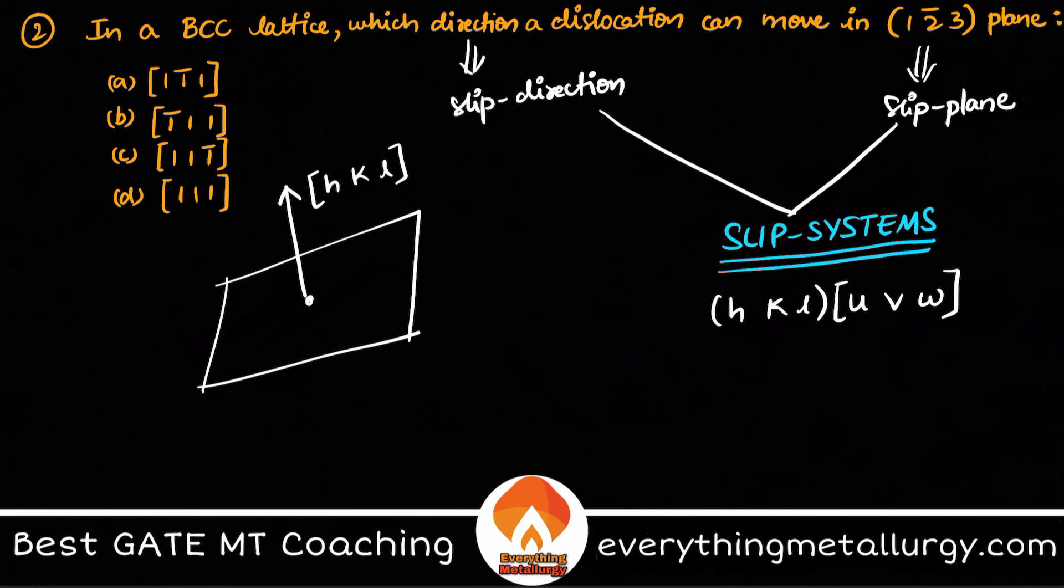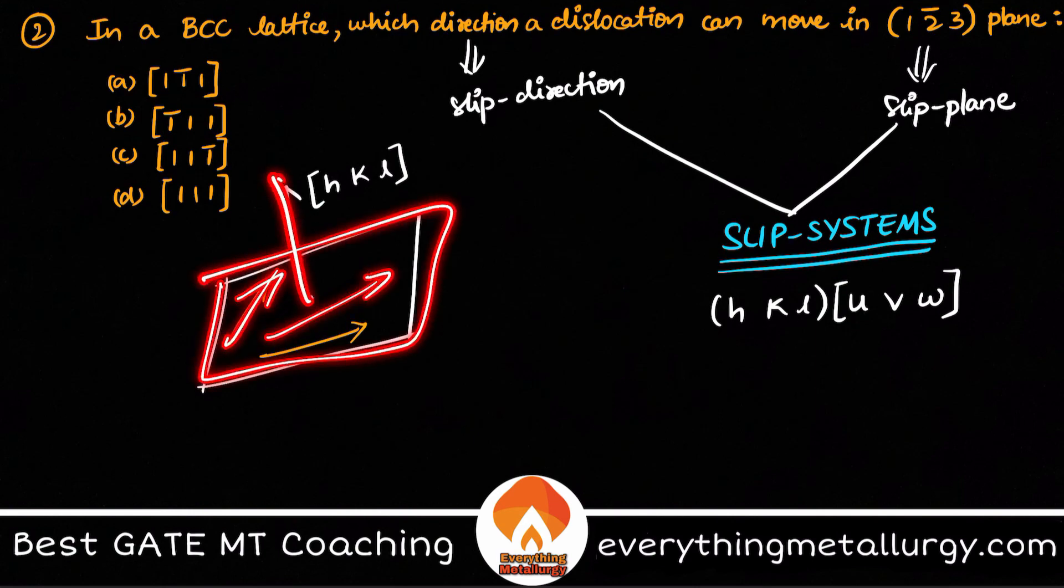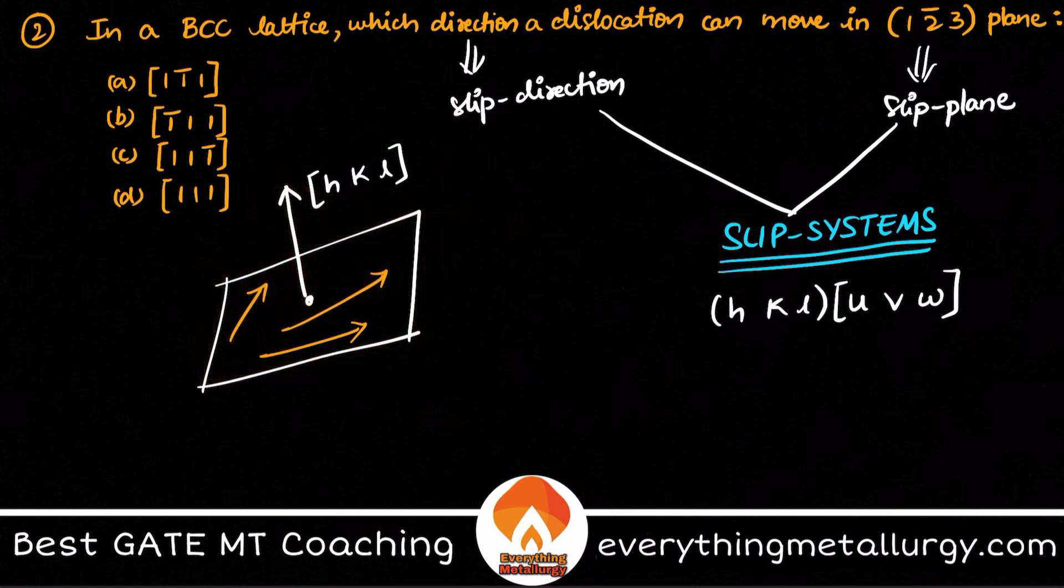Any direction which is present in a particular plane is also perpendicular to the plane normal, correct? Any direction if you take on this particular plane, it is obviously perpendicular to my plane normal. This particular condition can be applied to calculate this thing.